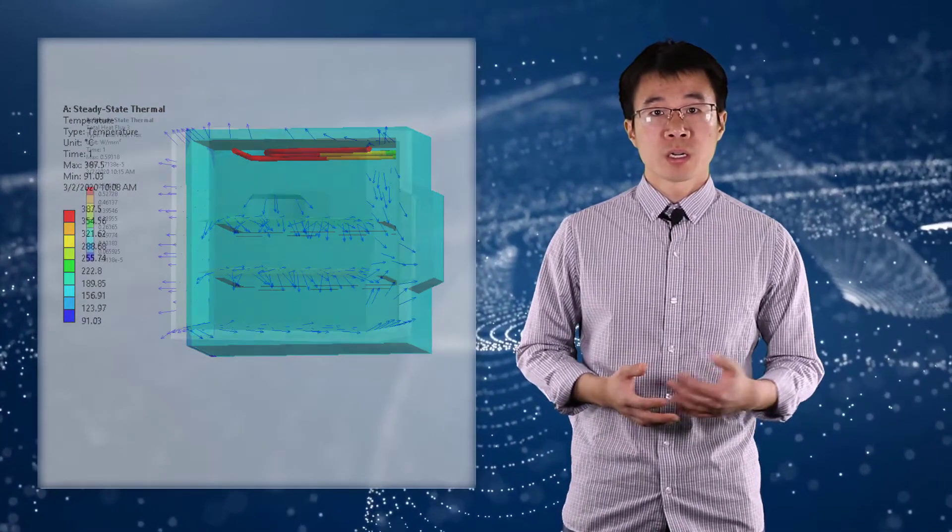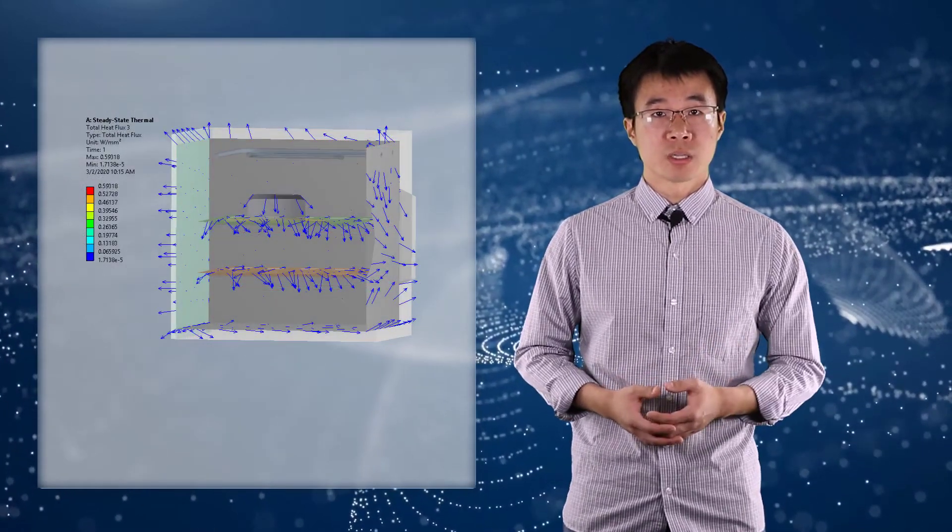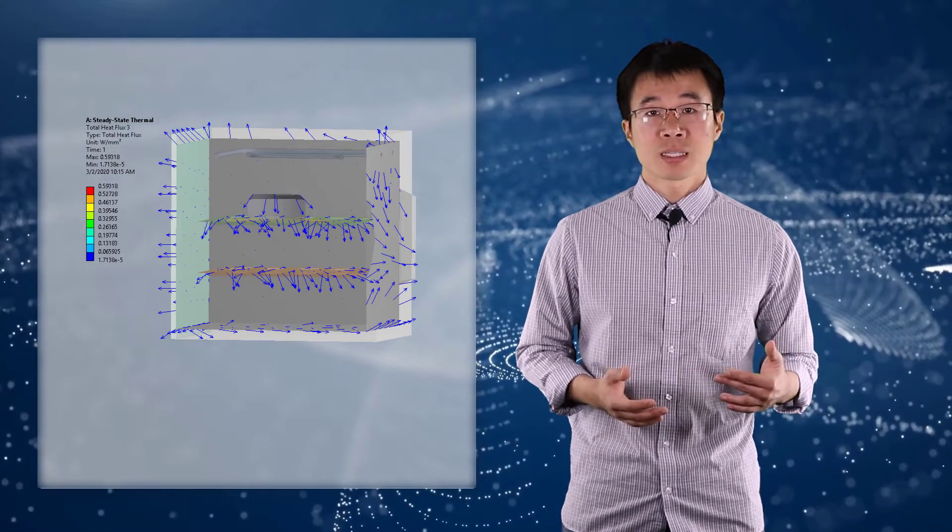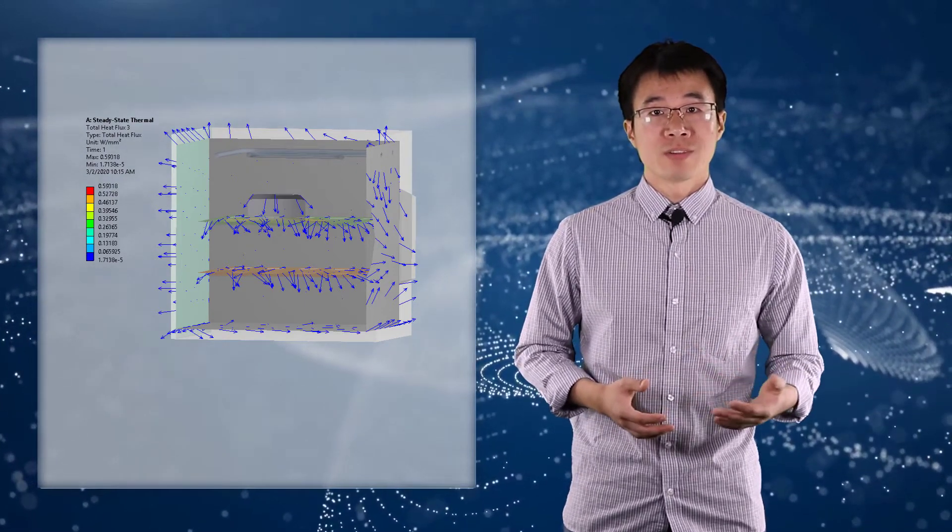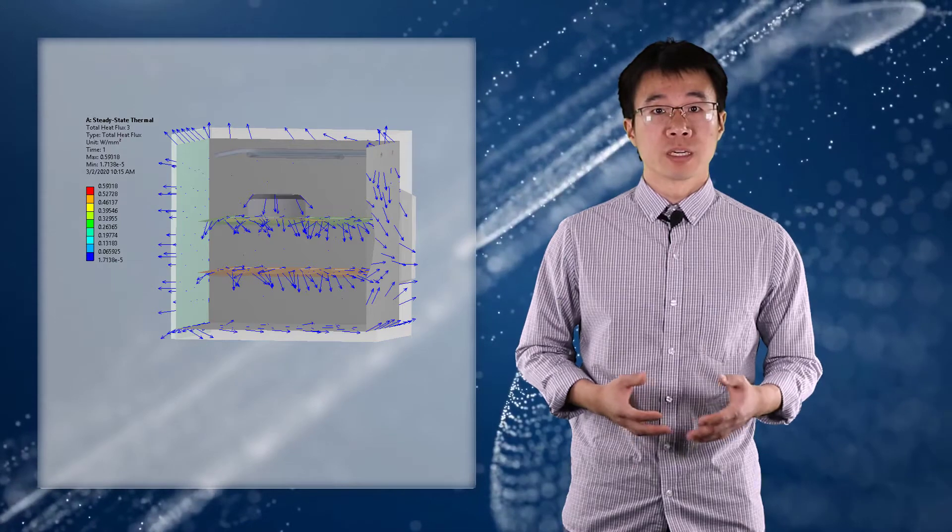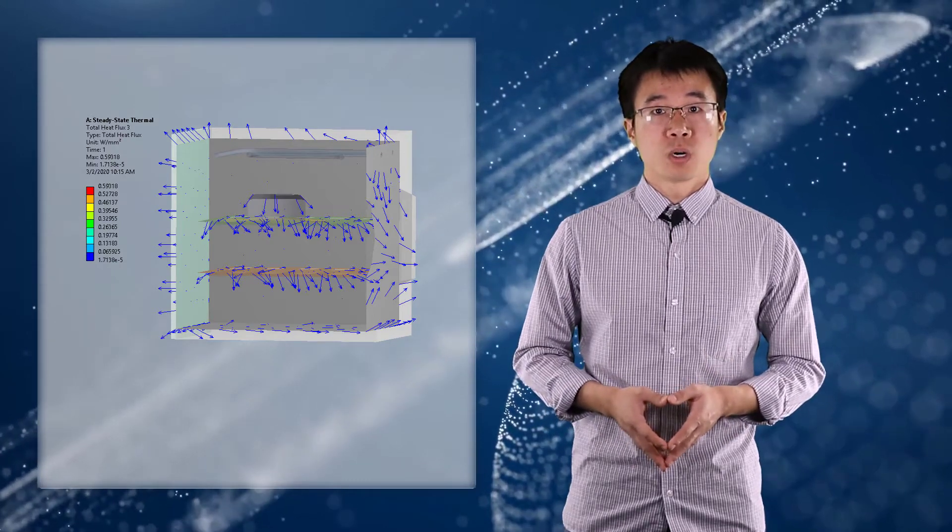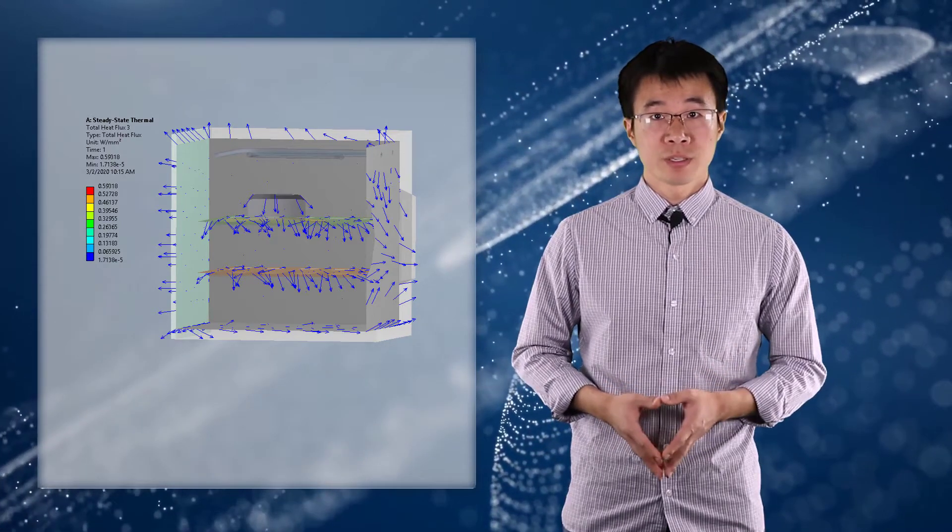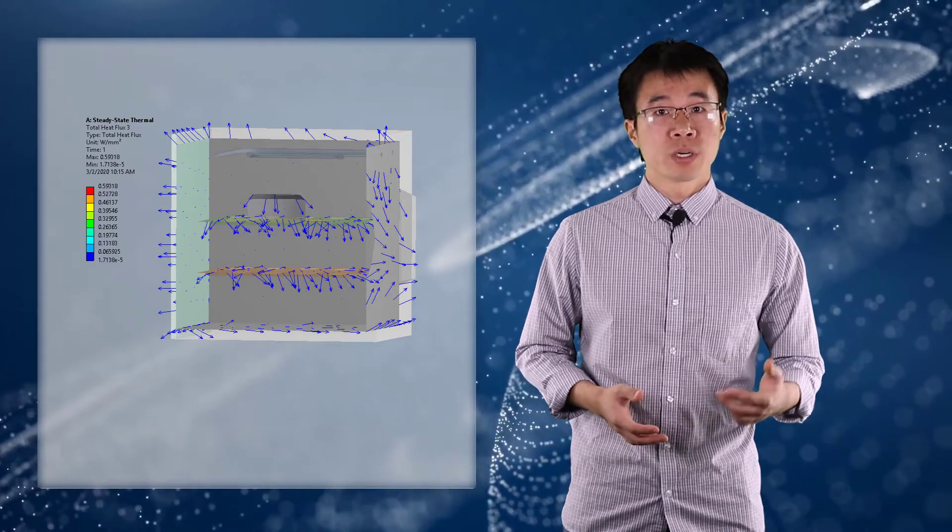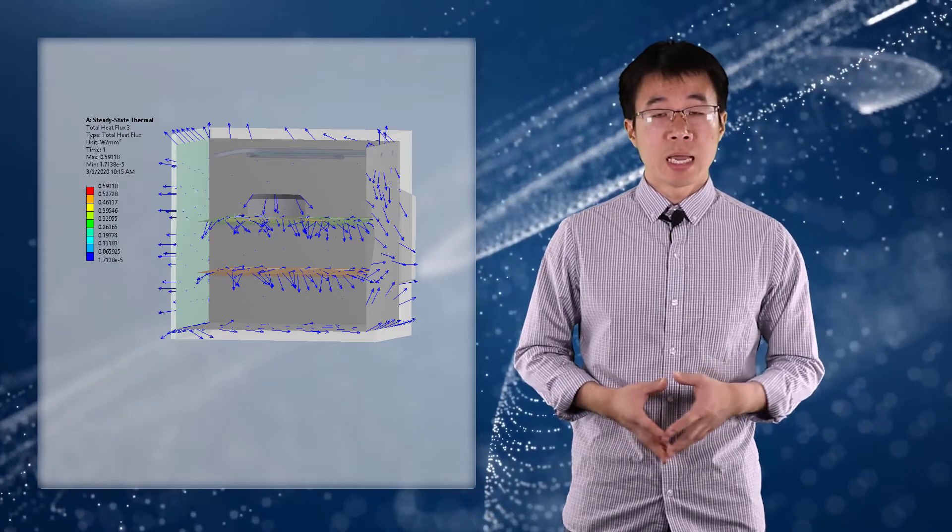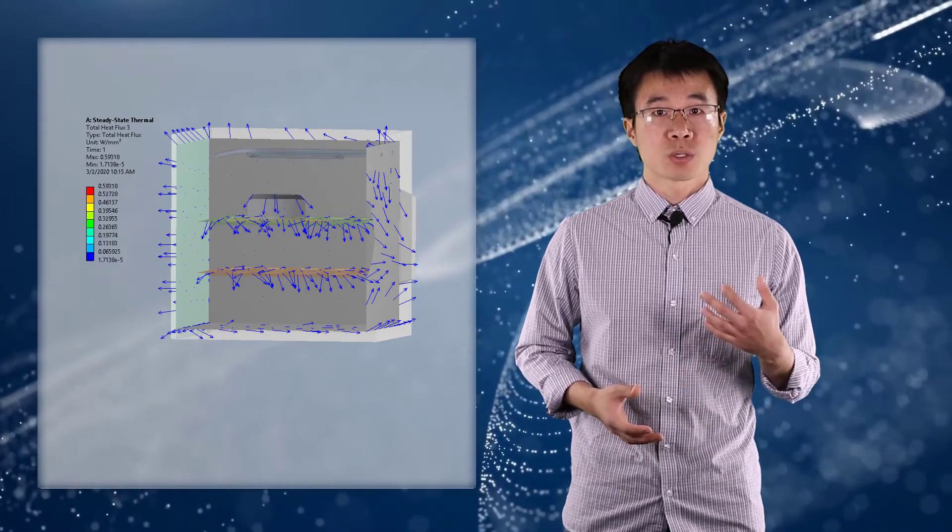Apart from temperature, we can also plot the total heat flux for the oven. Since heat flux is a vector, we can turn on the vector plot to get a better idea of the heat flow direction. For regions like the cake top surface, the vector arrows are pointing normal to the surface, and it indicates that the heat transfer is going into the cake.